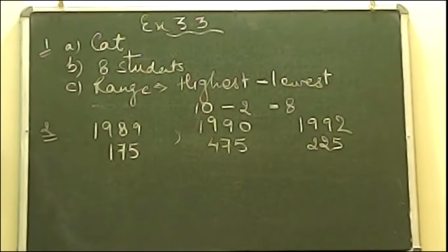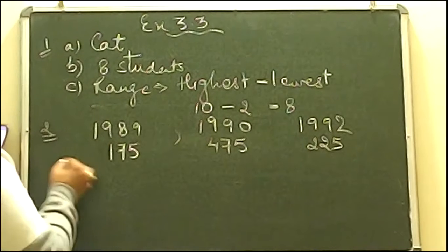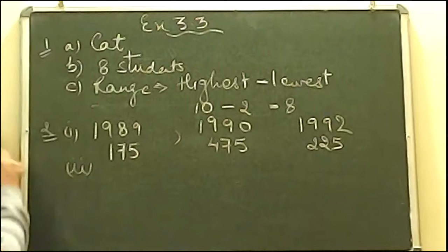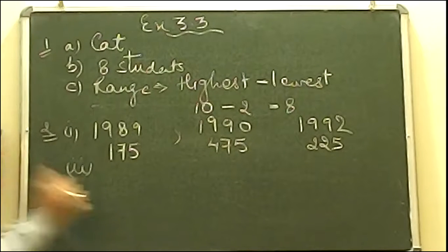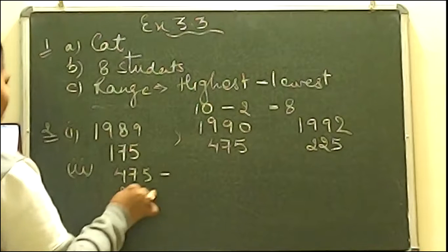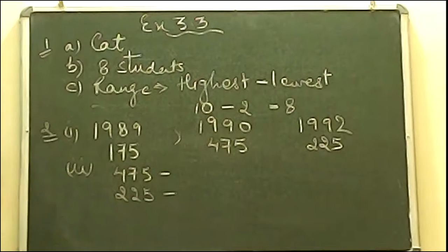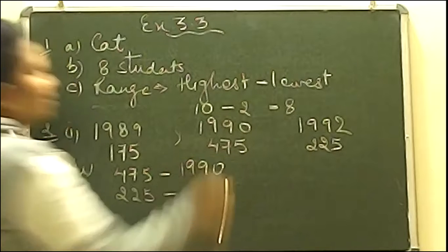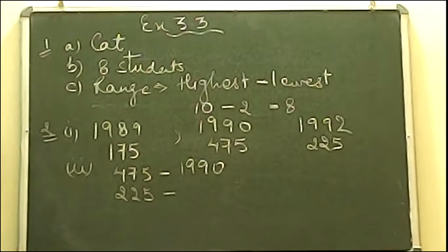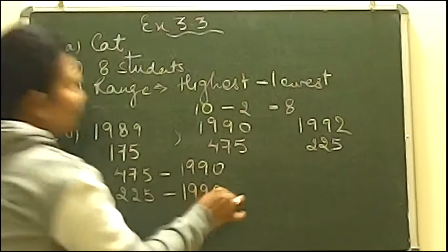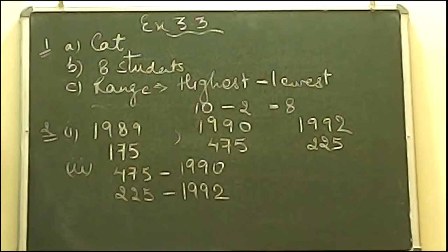Move on to the next question. It is telling in which year were about 475 books sold, and in which year 225 books sold? We have already answered I believe. You can see 475 books were sold in 1990 and 225 in 1992. Absolutely correct.